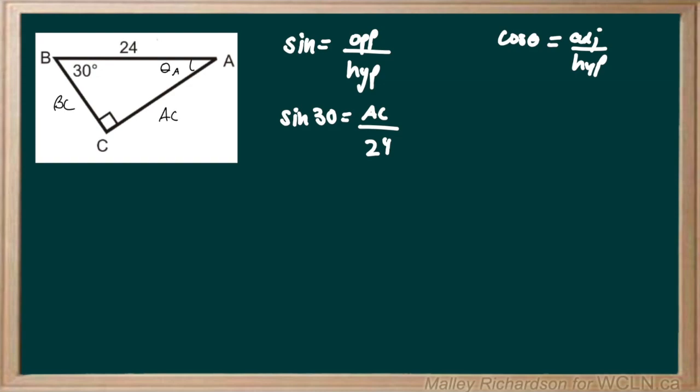Now to solve for AC, we want to multiply both sides by 24. Those two cancel out and we're left with 24 sine 30. When you put this in your calculator, you get an answer of 12 to be your side length of AC.